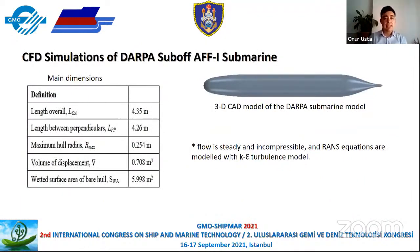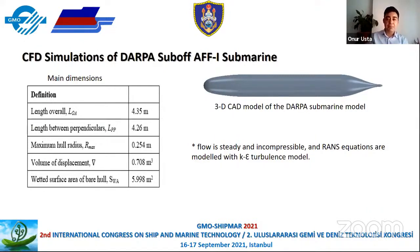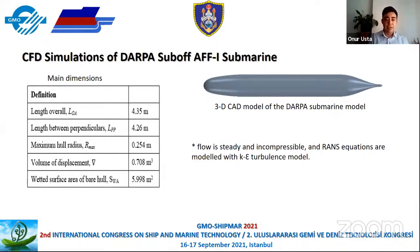Here you see the CFD simulations of the DARPA SUBOFF submarine. We used that submarine for the validation and verification of our CFD simulations. After that, we carried out simulations of the boxfish-inspired forms using the same conditions. We accepted the flow as steady and incompressible, and we solved the Reynolds-Averaged Navier-Stokes equations with the k-epsilon turbulence model.